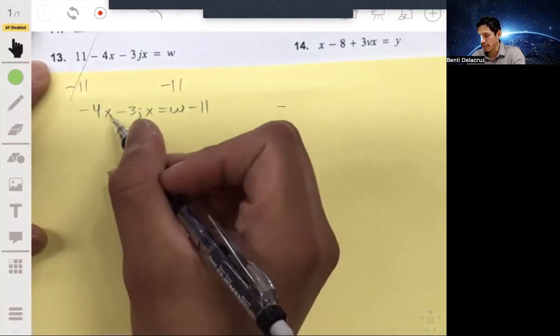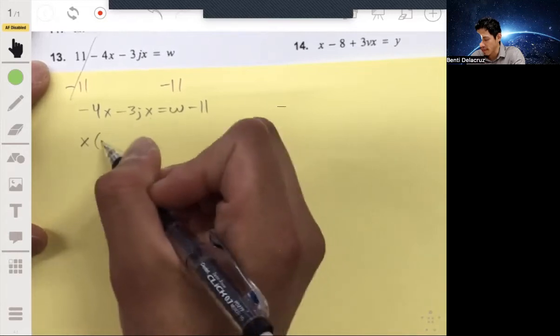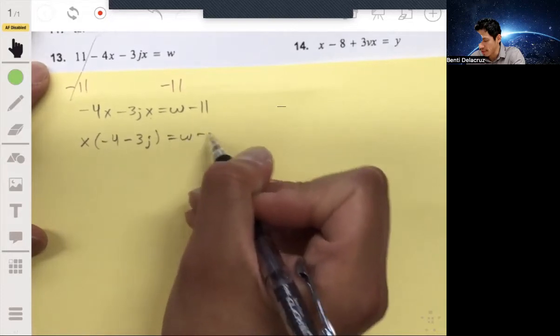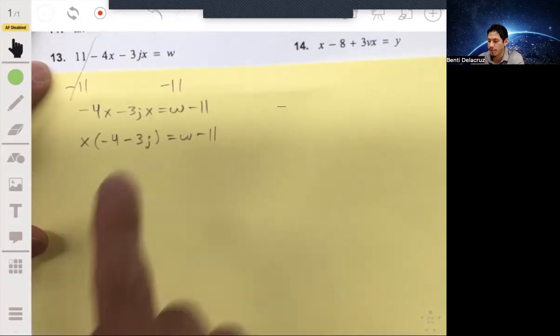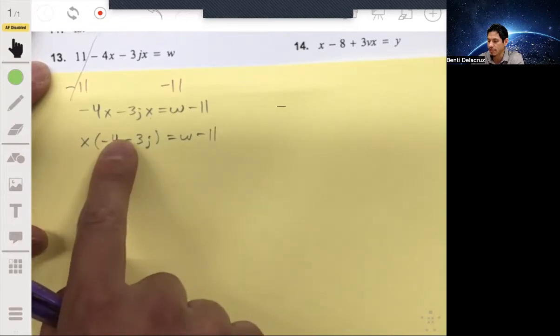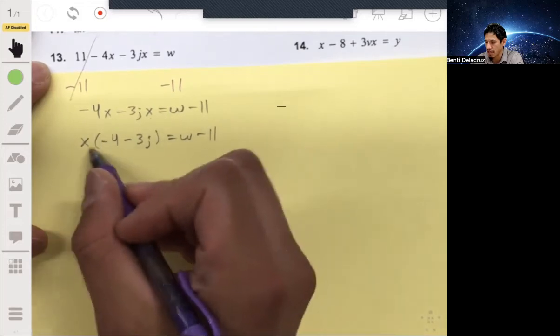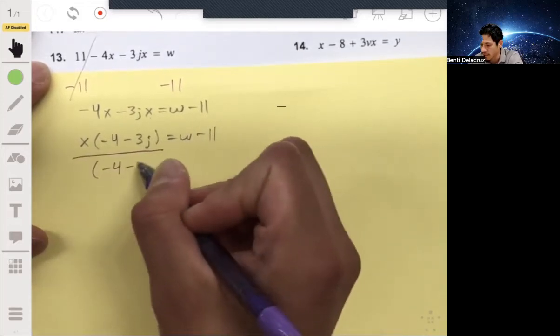Then we're going to factor out the X from each of these. So I'll have an X times a negative 4 minus 3J equals W minus 11. Again, if you were to distribute that X to the negative 4 and negative 3J, you would go back to this. But since we're trying to get X by itself, we're going to divide both sides by the minus 4 minus 3J.